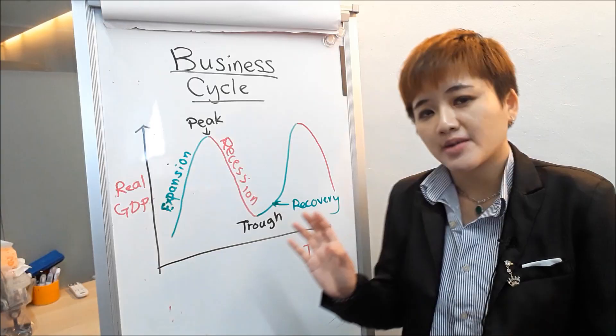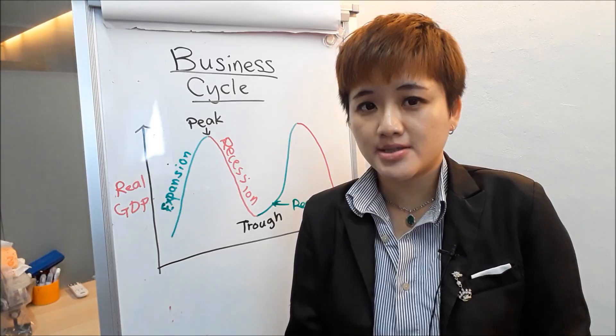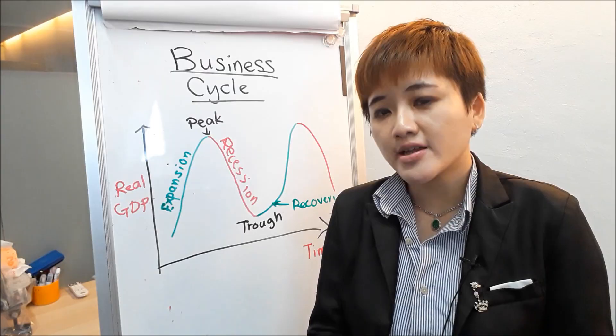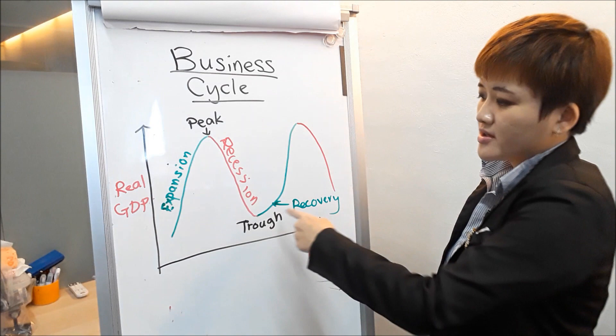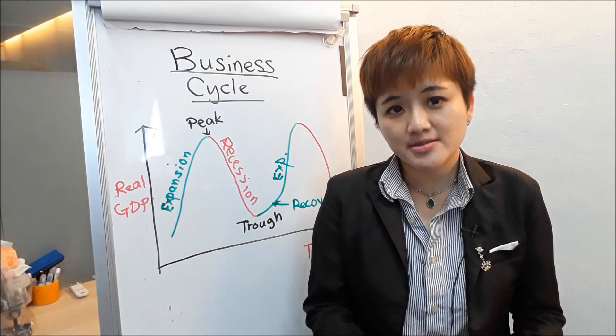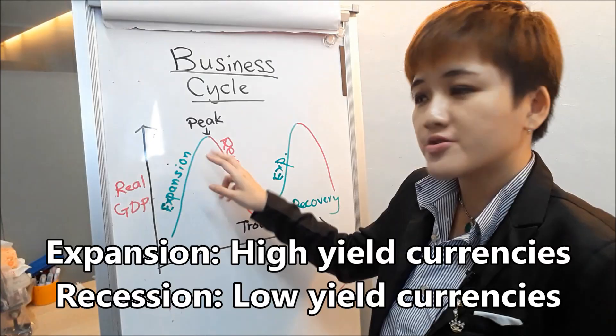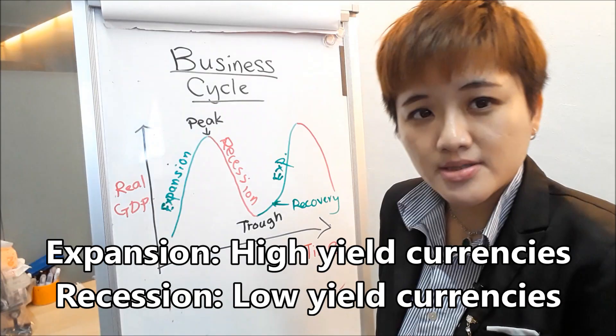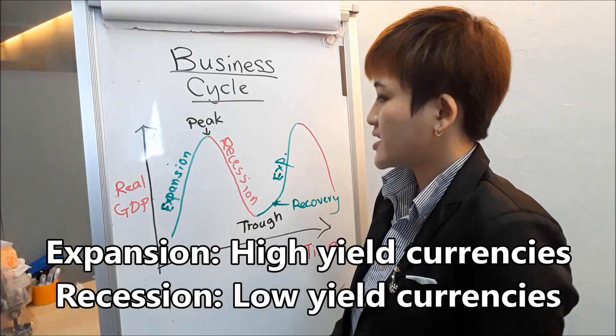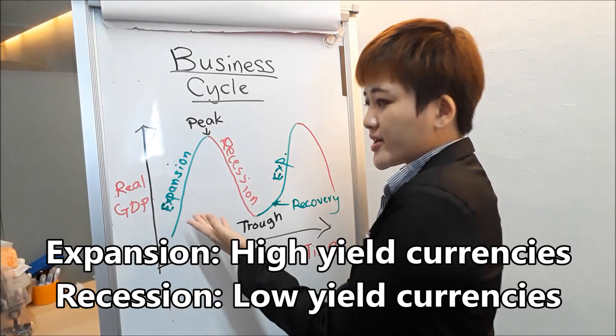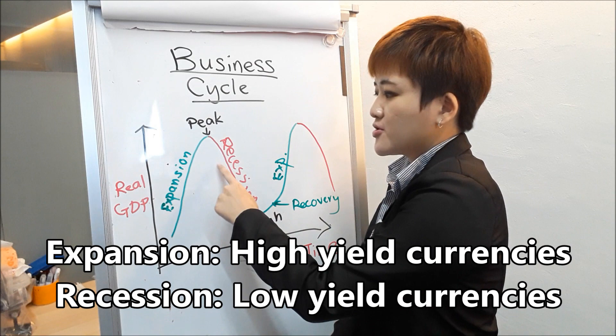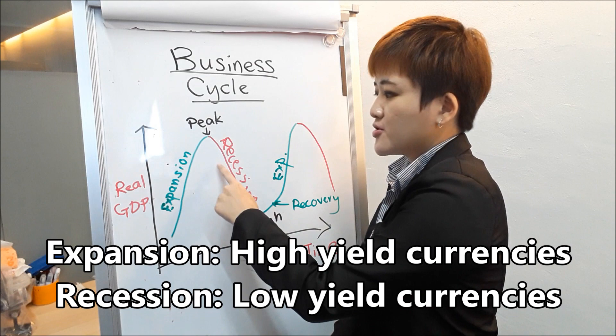During the start of the expansion phase — the recovery phase — you will observe: bond prices fall, yields go up, commodities go up, and cyclical stocks start making a U-turn. If you bought good stocks during a recession, you would earn money during the recovery. For currencies, during an expansion phase, high-yield currencies are going to do well. During a recession, low-yield currencies do well because investors put capital into safe havens. When times are good, buy high-yield currencies; when times are bad, buy low-yield currencies and short-sell high-yield currencies — pair a high-yield with a low-yield currency and you have a trade.